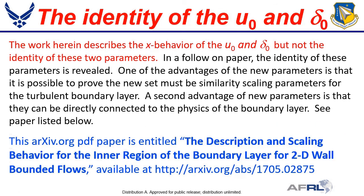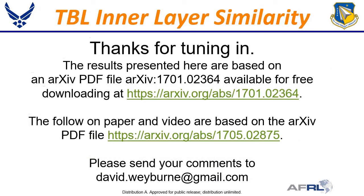The work we just reviewed describes the x behavior of u_0 and delta_0, but not the identity of these two parameters. In the follow-on paper listed here, the identity of these parameters is revealed. The advantages of the new parameters compared to the Prandtl parameters are discussed in detail. One advantage is that it is possible to prove the new set must be similarity scaling parameters for the turbulent boundary layer. A second advantage is that they can be directly connected to the physics of the boundary layer. The results are presented in an archive.org paper listed here. I am also working on a follow-on video based on the follow-on paper listed here. Please send any comments or suggestions to the email listed below. Thanks again. Goodbye.